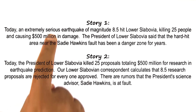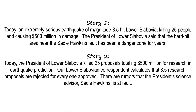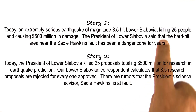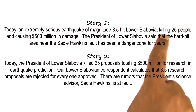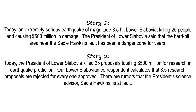When we discussed these two stories earlier using frames as a knowledge representation language, we found that we could have a frame for this notion of killing — the killing of 25 people — and this notion of killing — the killing of 25 proposals. And there was no simple way in the frame knowledge representation to disambiguate between those two meanings of killing.